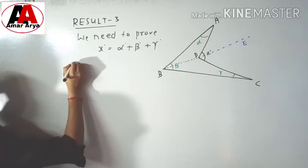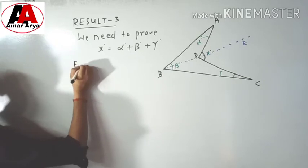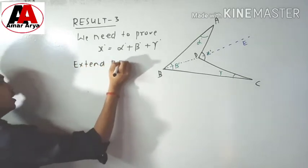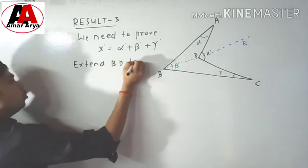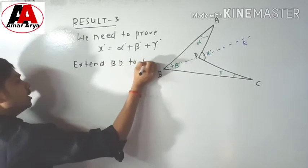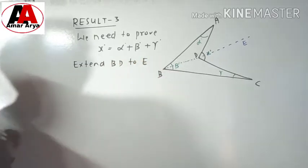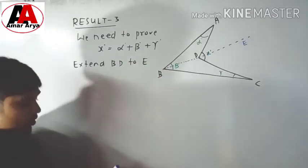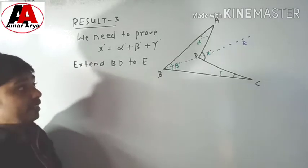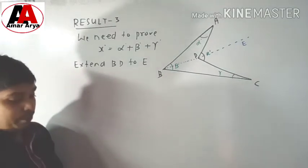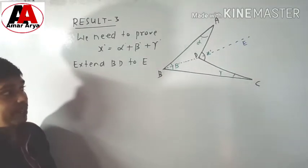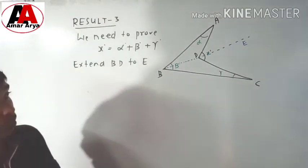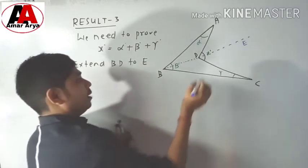We will extend BD — extend BD to point E. So now you can see that we can apply here the Exterior Angle Property, abbreviated as EAP.